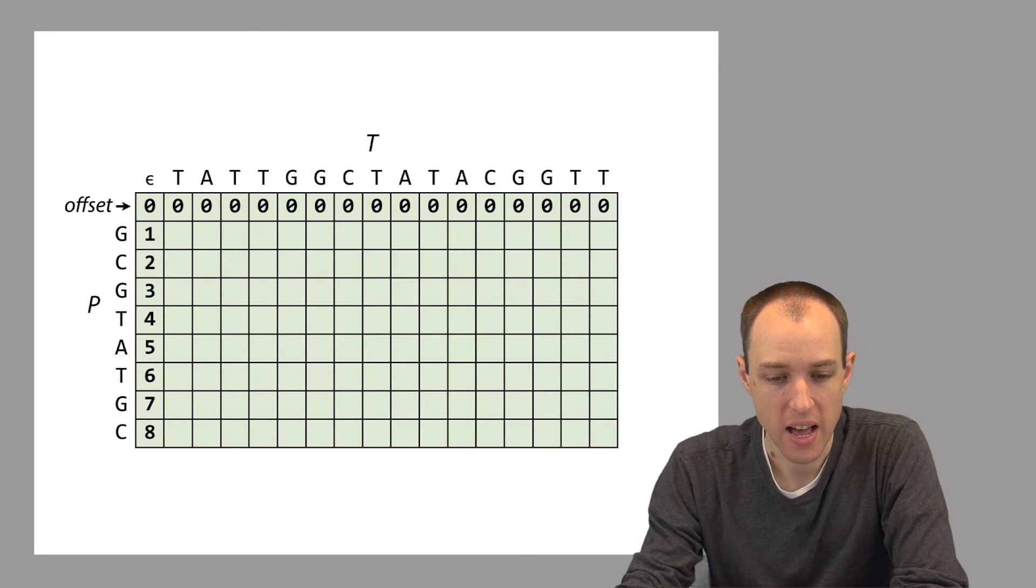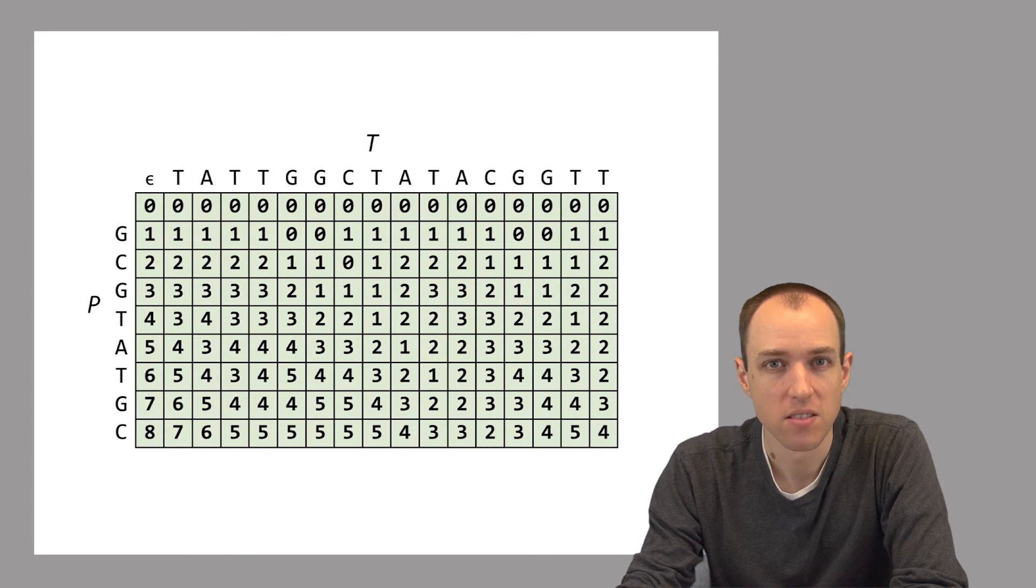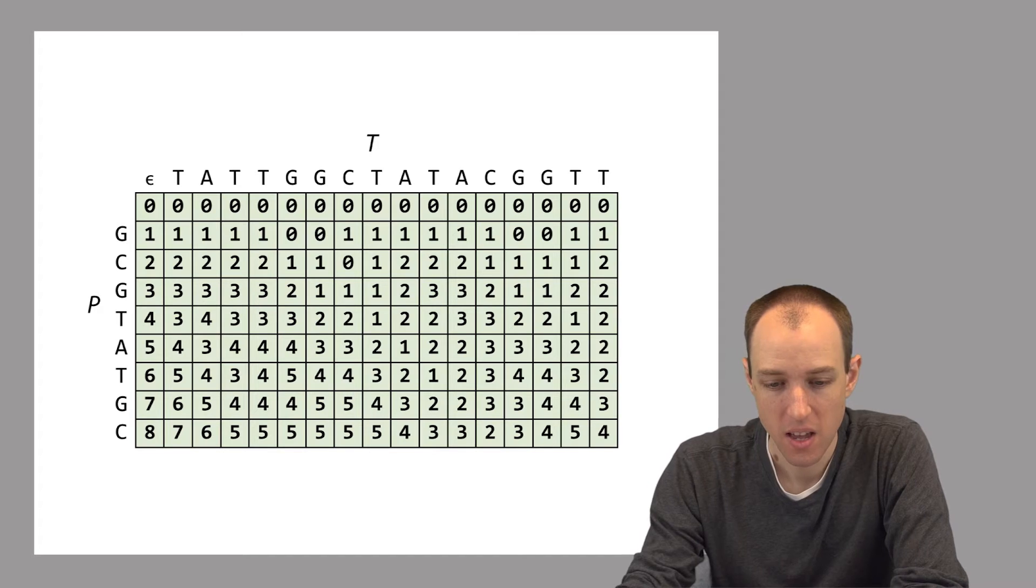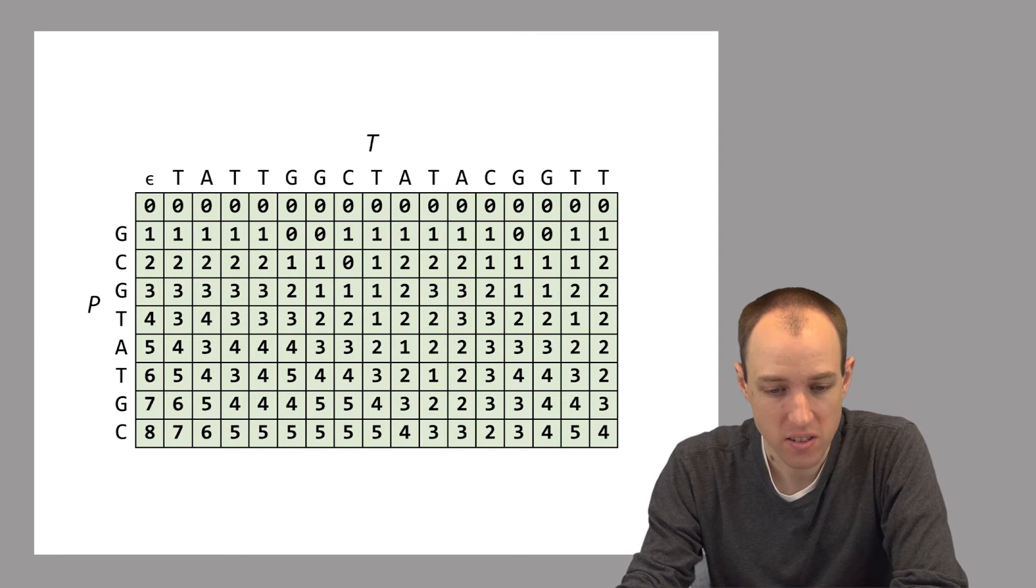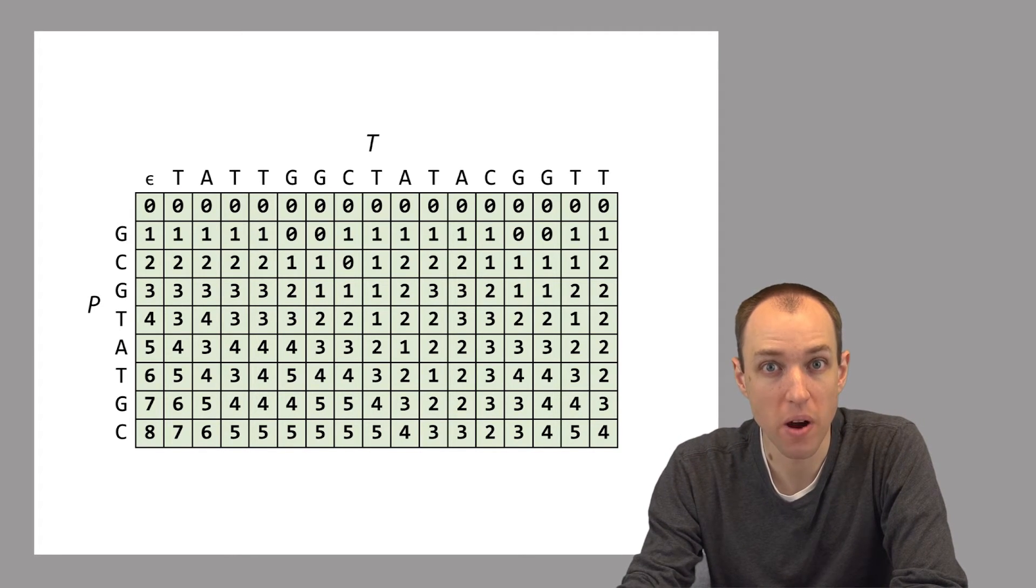Once the matrix is initialized we simply fill in the rest of the matrix in exactly the same way as we did for the edit distance problem. Now that we've filled in the matrix we'd like to identify where are these approximate matches of P within T.